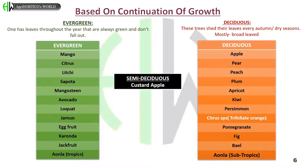Semi-deciduous or semi-evergreen is a botanical term which refers to plants that lose their foliage for a very short period when old leaves fall off and new foliage growth is starting. Custard apple is an example of this.